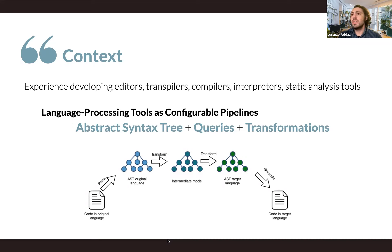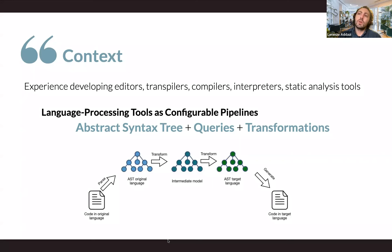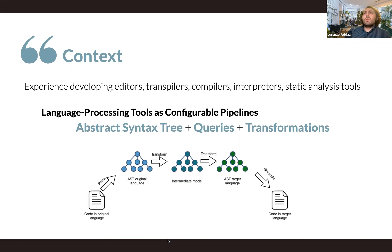The pipelines are made of components that could be composed to create different kinds of language processing tools. The most relevant components we identified were abstract syntax trees, queries over abstract syntax trees, and transformations. In the example picture of a transpiler below, we can clearly identify the pipeline: first we create an AST from the parse tree obtained by parsing the code in the original language, then we perform transformations to an intermediate model, and then to the AST of the target language. Finally, we generate the code in the target language.